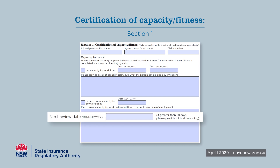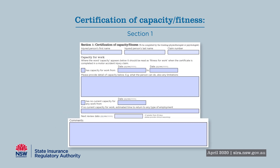The next review date identifies the timeframe when you anticipate the person's capacity is likely to have changed. The CTP and workers' compensation legislation allows for a certificate to be provided for a period greater than 28 days in special circumstances. However, this is not appropriate if changes in the person's capacity are anticipated within that time period. If the next review date is greater than 28 days, please outline the reasons why in the comments box.